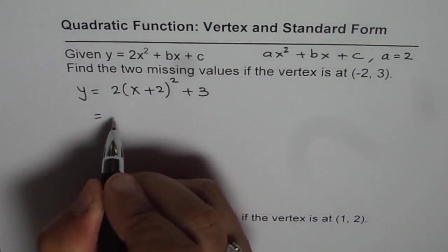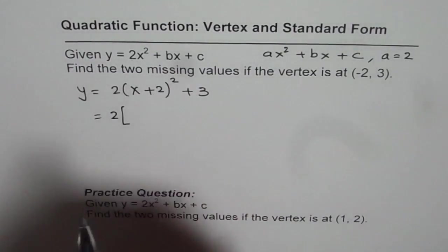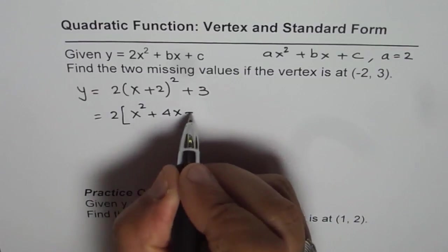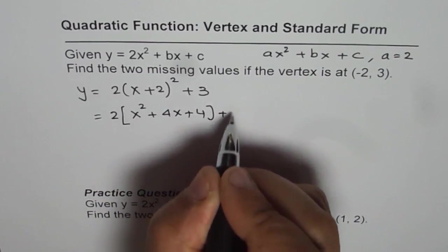Now let us expand it. x plus 2 whole square is x² plus 4x plus 4, we have plus 3 here.